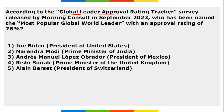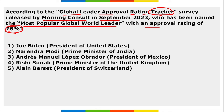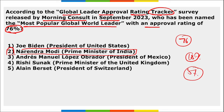According to the Global Leader Approval Rating Tracker survey released by Morning Consult in September, who has been named the most popular global world leader with an approval rating of 76%? It is Prime Minister of India, Narendra Modi. He has an approval rating of 76%, the highest in the world — with 18% disapproval and 5% giving no opinion. Previously in 2021 and 2022, Prime Minister Narendra Modi also topped the list of the most popular global leader.